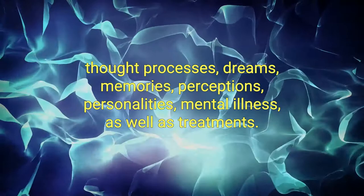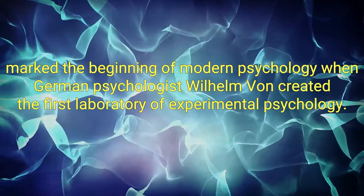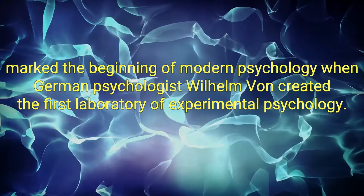Even though psychology existed in ancient Greece, it was not until the end of the 19th century that it gained the status of an independent science. The year 1879 marked the beginning of modern psychology, when German psychologist Wilhelm Wundt created the first laboratory of experimental psychology.